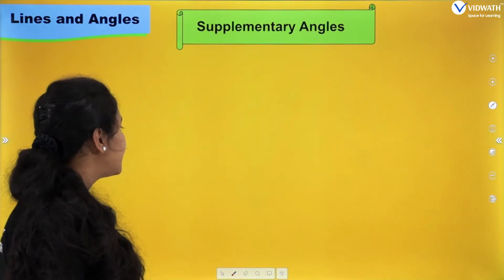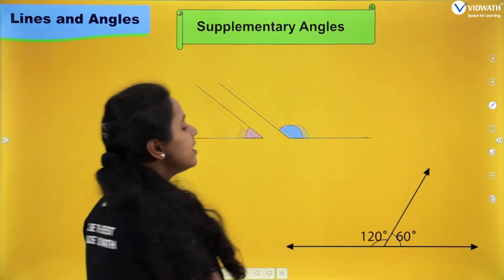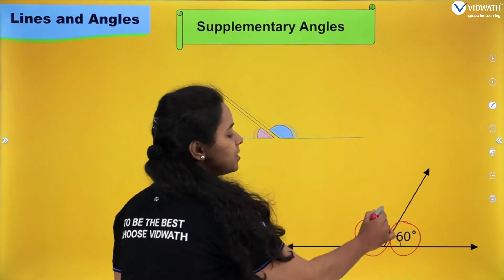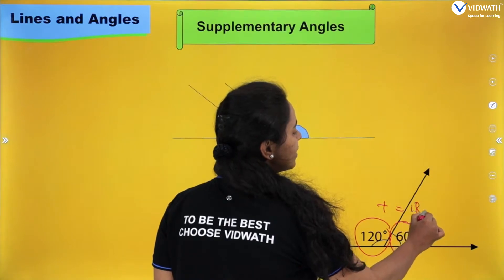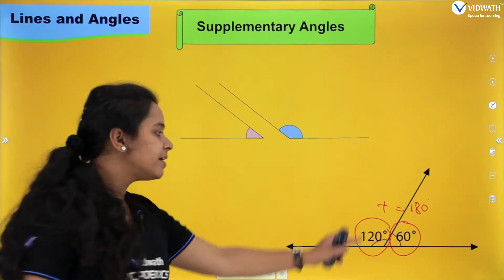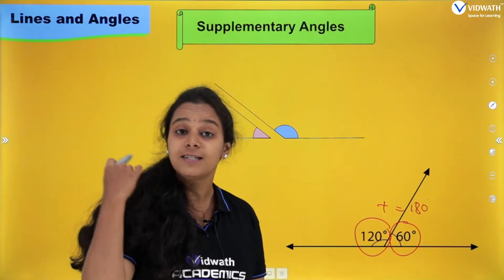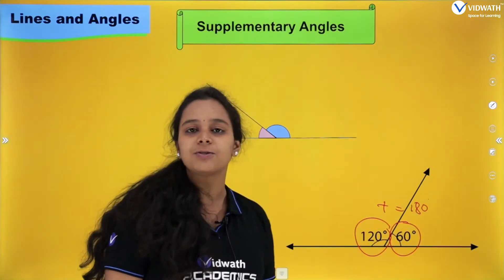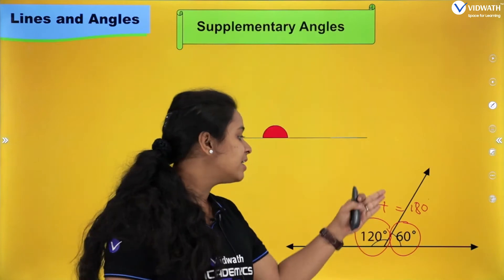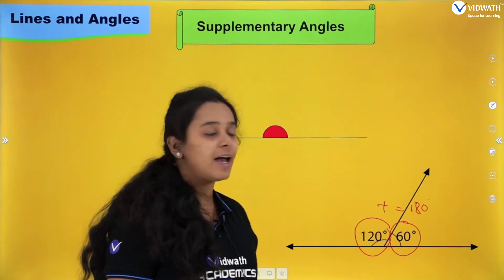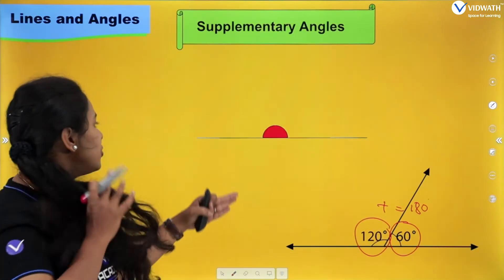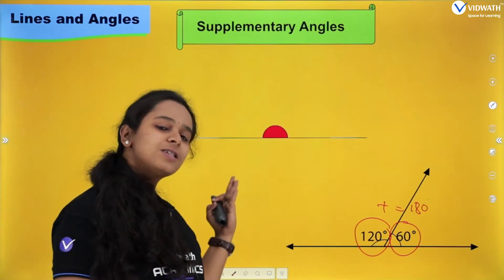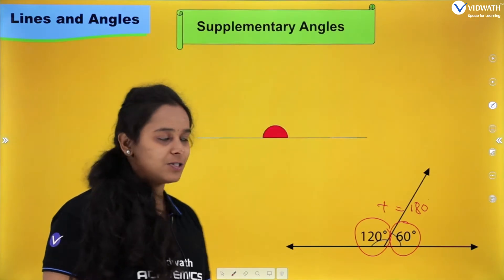The next is supplementary angles. If the sum of two angles measures 180 degrees, those two angles are called supplementary angles. Here, 120 plus 60 degrees gives 180 degrees, so these are supplementary angles.